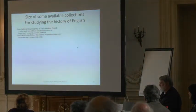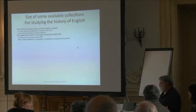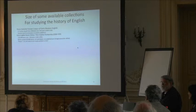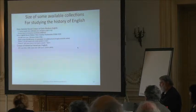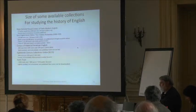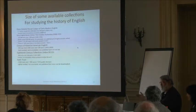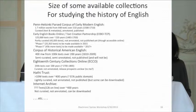Early English Books Online has 125,000 texts over 220 years — much better. It's partly curated: about 40,000 texts are done; the first 25,000 will be available in a couple of years. The Corpus of Historical American English has 400 million words across 100,000 texts. The HathiTrust has 10 million texts over 400 years, 31% of which are openly accessible. Internet Archive has probably all of HathiTrust's public domain material — a few million texts.